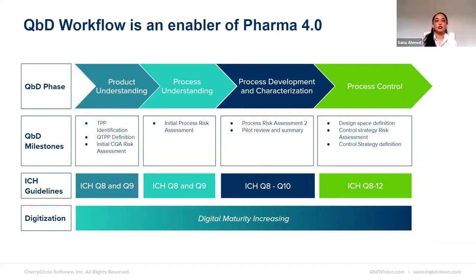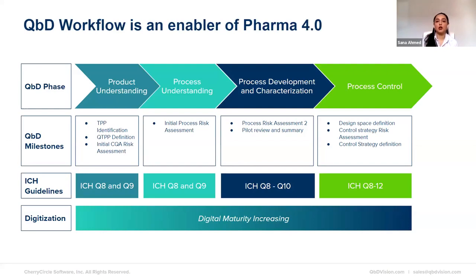The Quality by Design workflow is an enabler of Pharma 4.0. I've provided a bigger picture of where DOE sits, but what about the big picture of where QBD sits? The QBD phases I'm going through align with the Pharma 4.0 initiative, which was defined and driven by the ISPE. By using the QBD principles and the ICH guidelines, along with the Pharma 4.0 enablers, your pharmaceutical company or organization will be well on its way to achieving the goals that were set out in Pharma 4.0.